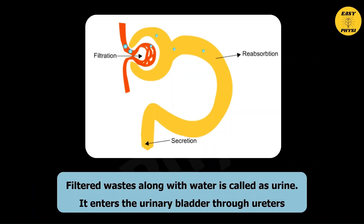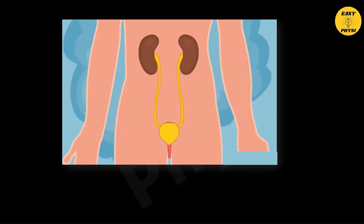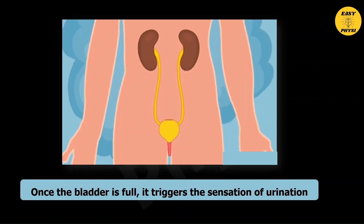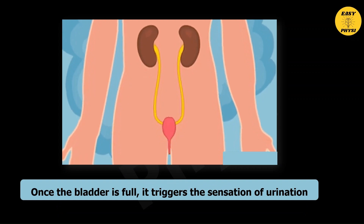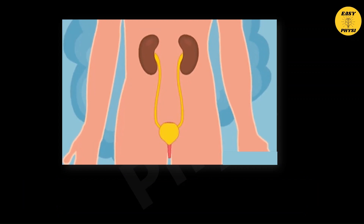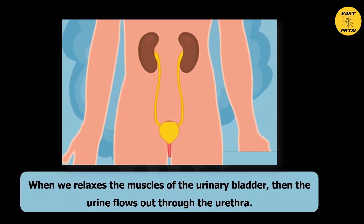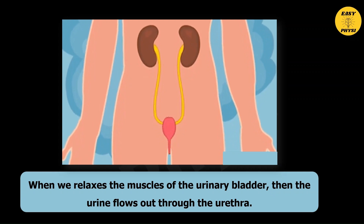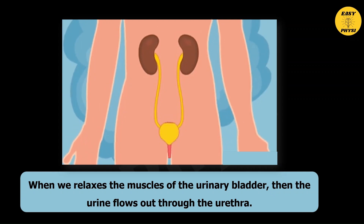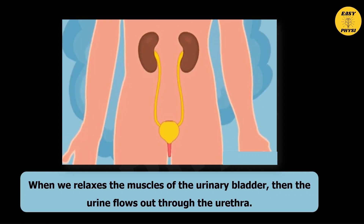Filtered waste along with water is called urine. It enters the urinary bladder through the ureters. Once the bladder is full, it triggers the sensation of urination. When we relax the muscles of the urinary bladder, the urine flows out through the urethra.